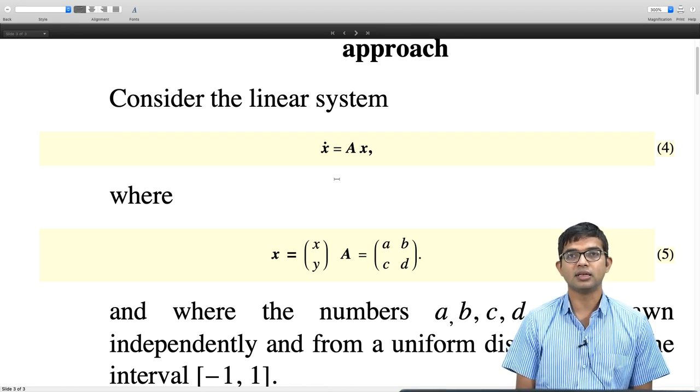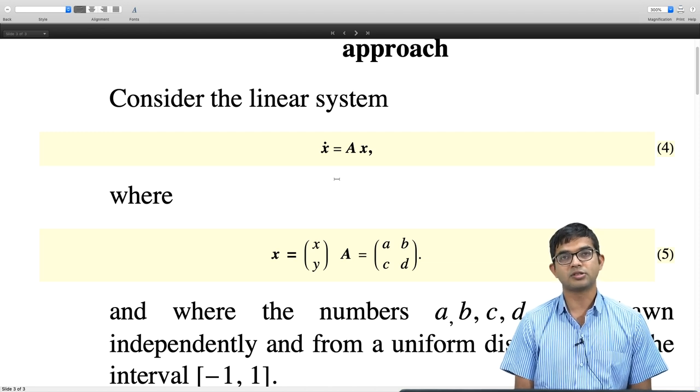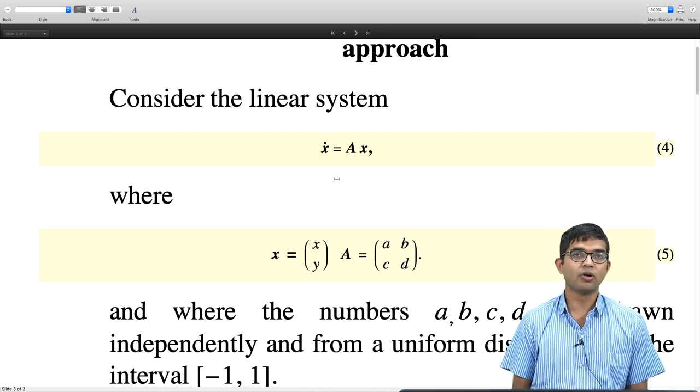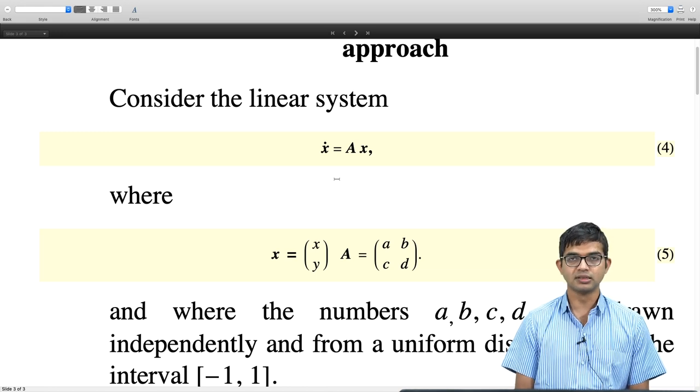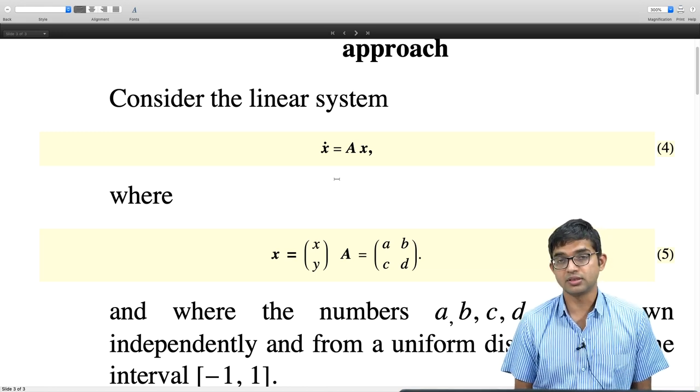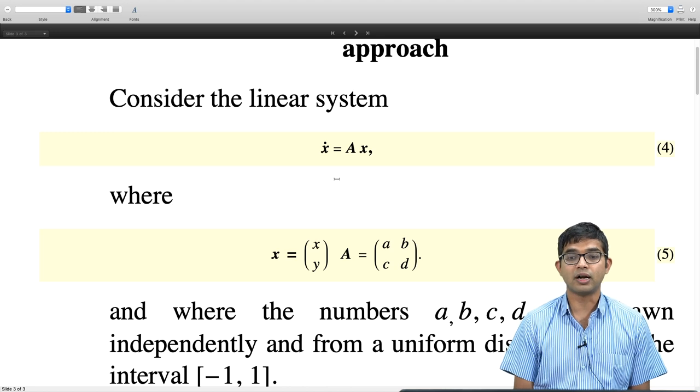Now I can ask what is the probability that the fixed point that I will just randomly pull out of this box. You can think of this as an ensemble of matrices. In some sense this is considering an ensemble of random matrices.